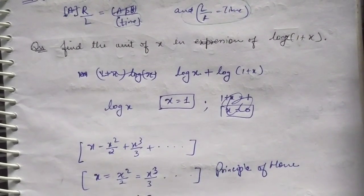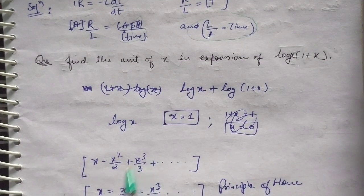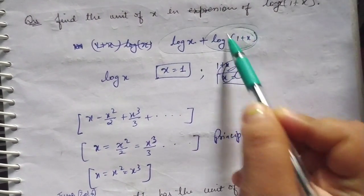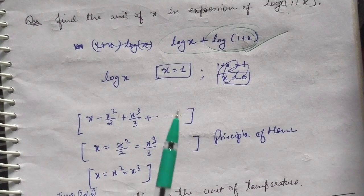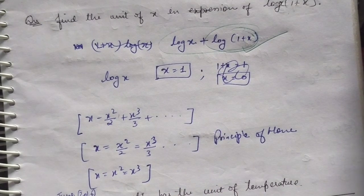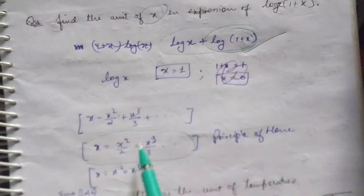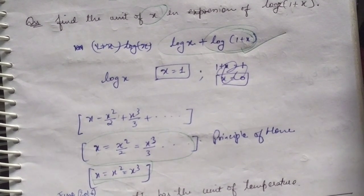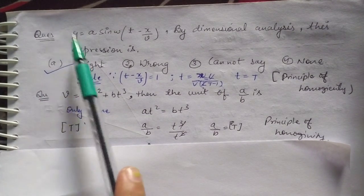Next question: find the unit of x in the expansion of log(1 + x). We know the log expansion is x − x²/2 + x³/3 and so on. Since logarithmic functions are dimensionless, this equals 1. Using the principle of homogeneity, x equals x²/2 equals x³/3, so all terms have equal dimension. Therefore x must be dimensionless, meaning the dimension of x is 1.